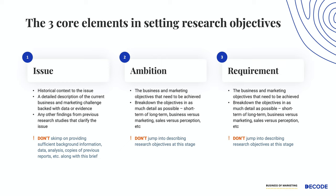In the issue section, you should talk about the background and the historical context that has led to this issue in the first place. After that, try and get to a detailed description of what exactly is the current business and marketing problem, and write it with the help of as much data and evidence so that it is fact-based and not assumption-based. You should also include any findings from previous research studies which can help clarify or better understand the issue.